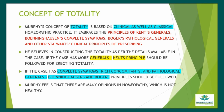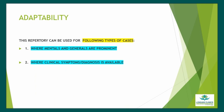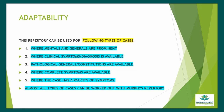The repertory can be used for all types of cases: 1. Where mentals and generals are prominent; 2. Where clinical symptoms and diagnosis are available; 3. Pathological generals and constitutions are available; 4. Where complete symptoms are available; 5. Where the case has paucity of symptoms. So, almost all types of cases can be worked out with the help of Murphy's Repertory.